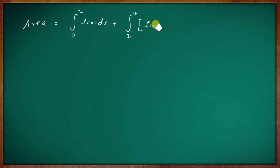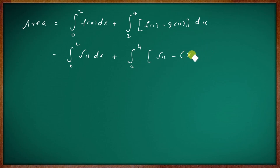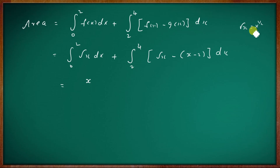We compute f of x minus g of x dx. From 0 to 2, f of x is root x, dx. Plus from 2 to 4, f of x is root x minus g of x which is x minus 2, dx. Root x is integrated as x raised to 1 by 2, so integral of root x is x raised to 1 by 2 plus 1, divided by 1 by 2 plus 1.